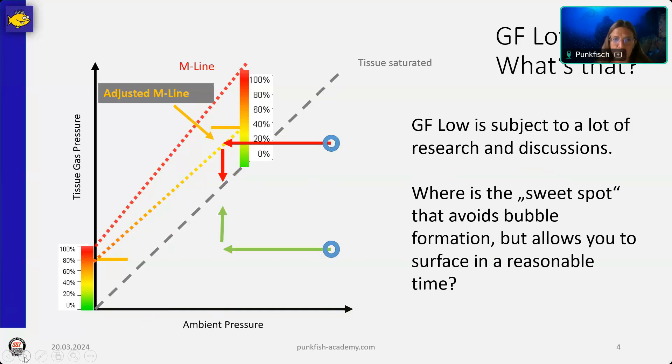So, this is exactly the point of a lot of discussions. Gradient factor low is the most discussed part of gradient factors. Because what we want to find is this nice sweet spot where we do our stops early enough that bubbles did not yet form, but where we do not oversaturate too many other tissues in too big a way, and that we can still get out of the water in some moment, because we want to end the dive in some moment.